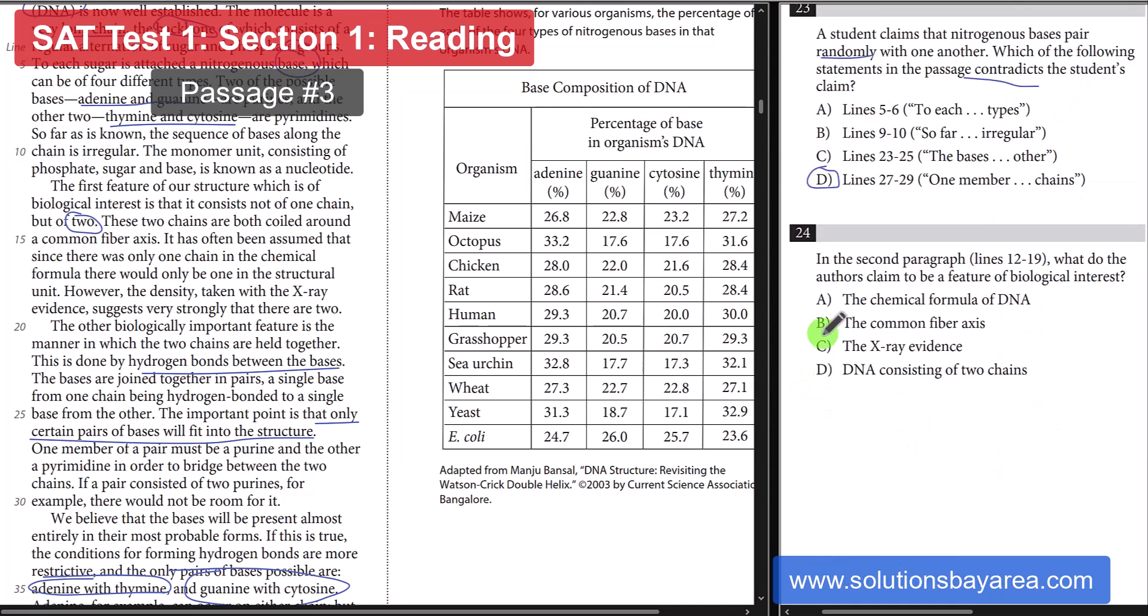Number 24. What do the authors claim to be a feature of biological interest on 12 and 19? So, going back here. The biological interest is that it consists not of one chain, but of two. So, that is the most important thing. So, that's going to be D.